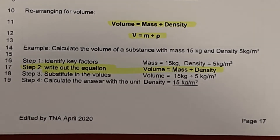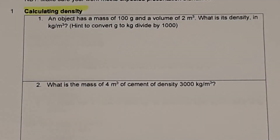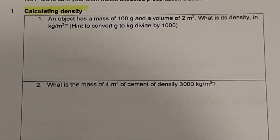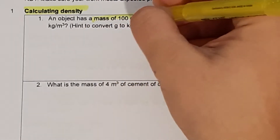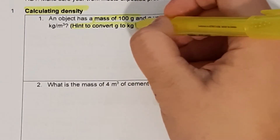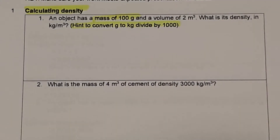On page 18 you will find six questions about calculating density, using all the equation rearrangements we've seen. Be careful — in question one, the object has a mass of 100 grams, so you'll need to convert grams to kilograms by dividing by 1,000. You may also need to do other conversions. Pause the video whilst you complete those questions.